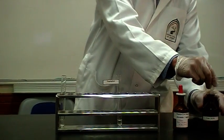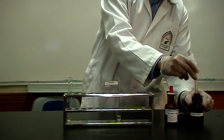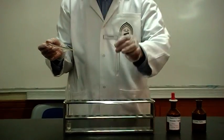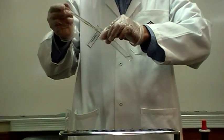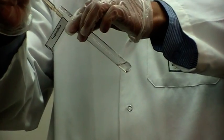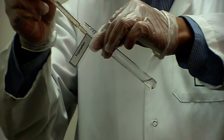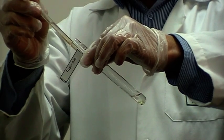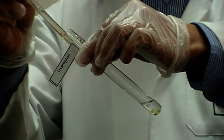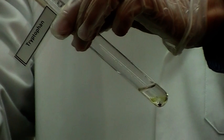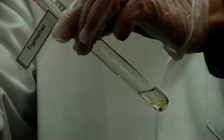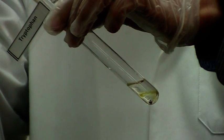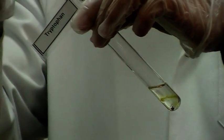And then be very careful about adding around 2 ml of concentrated sulfuric acid to the side. Let's take this tube. Slowly add around 2 ml of sulfuric acid.